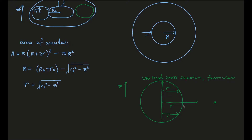Due to symmetry, we only need to consider y as a function of z, and x may be ignored. The value of lowercase r and capital R varies along the z-axis, and let R₀ be the radius of the cross section of the solid ring body part.